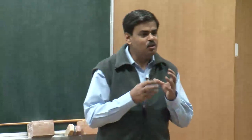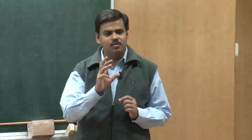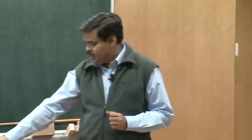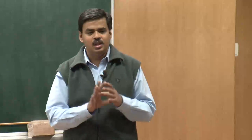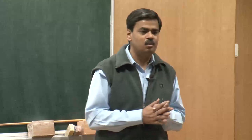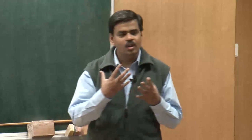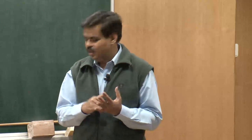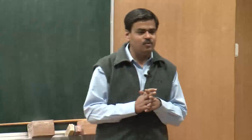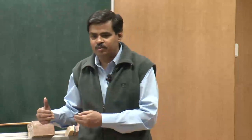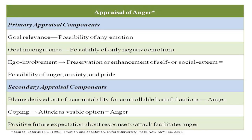With respect to ego involvement, similar definitions apply as when we discussed pride—self-esteem and social esteem both play an important role. There is still a possibility of appraising the experience as anger, anxiety, or even pride, so goal congruence and incongruence still matter. Secondary appraisal becomes important: if there is blame deriving from knowledge that someone is accountable for a harmful action that could have been controlled, then anger occurs.